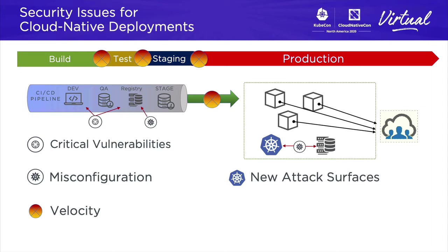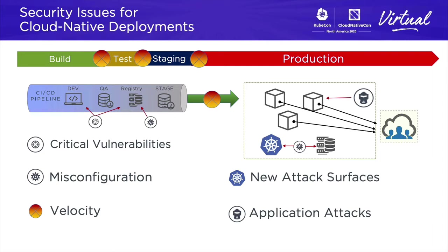Once those containers are deployed, there are not only risks from the applications themselves, but now you have new attack surfaces such as the Kubernetes API, the orchestrator itself, the container runtime, or if you're using a service mesh like Istio, the control or data plane can also be a potential attack vector. And finally, there are all the traditional attacks against applications — vulnerability attacks, ransomware, crypto mining — these are all serious things to think about.